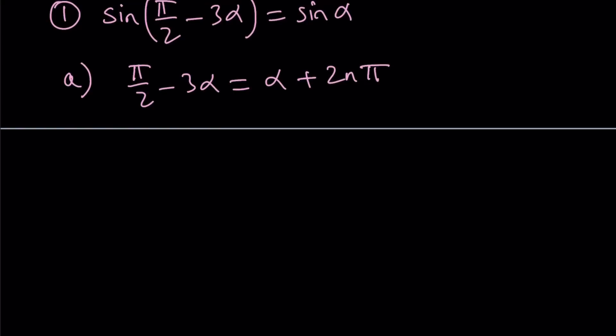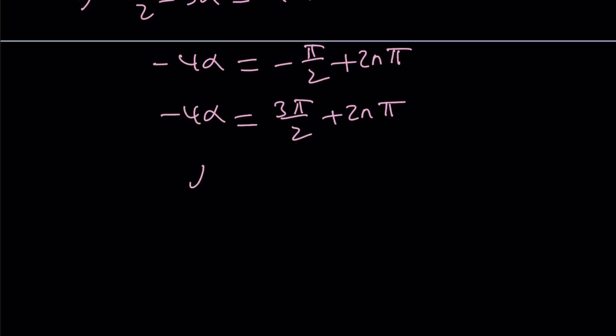negative 4 alpha equals negative pi over 2 plus 2n pi. And negative 4 alpha can be written as 2 pi minus pi over 2, which is going to be 3 pi over 2 plus 2n pi. And then divide both sides by negative 4. You're going to get alpha equals negative 3 pi over 8